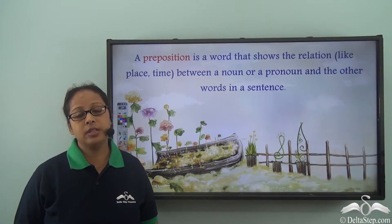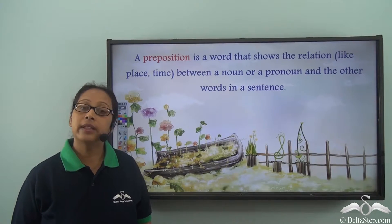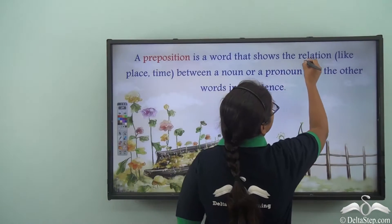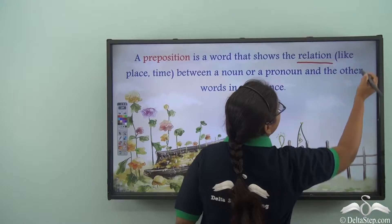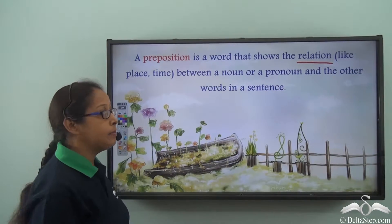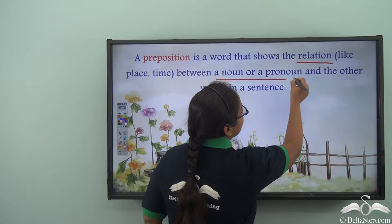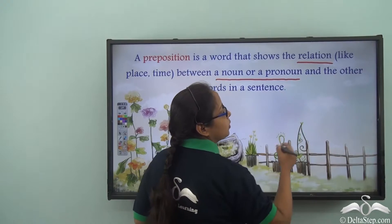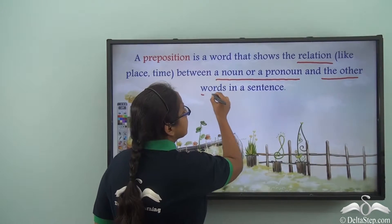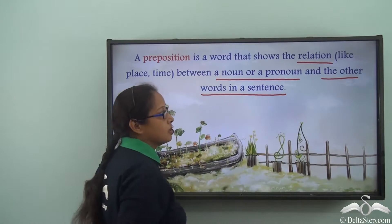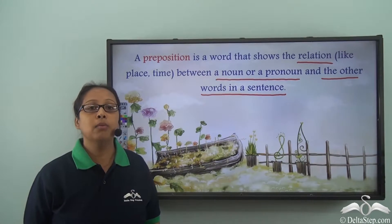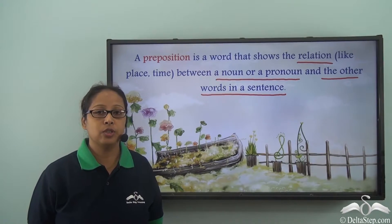A preposition is a word that shows the relation — like place and time — between a noun or a pronoun and the other words in a sentence. Today we are going to learn some more prepositions.